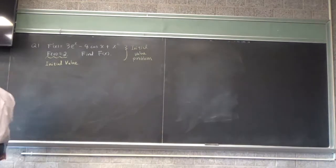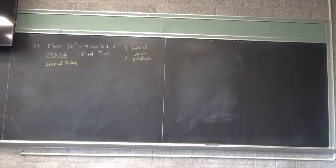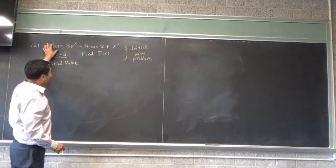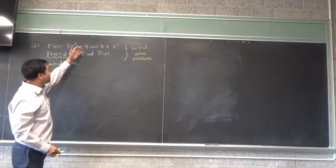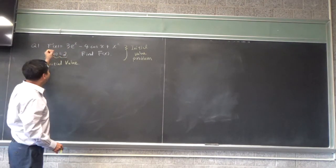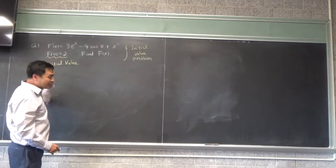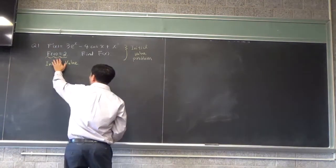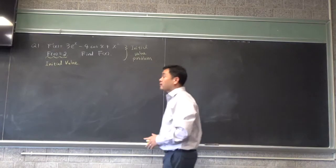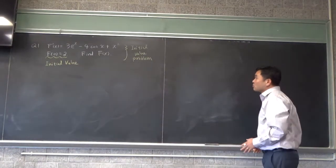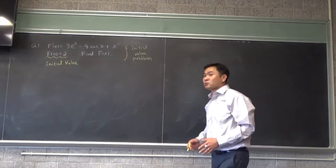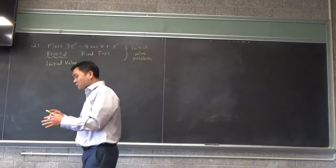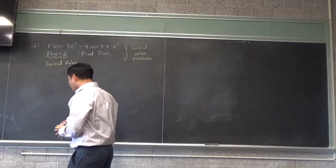Initial value problems have an equation that has a derivative, so you can really think of this as a differential equation, because there's a derivative and an equal sign. And then there's a condition which we call the initial value. Now a solution to the initial value problem is called a particular solution, but let me explain why that is a little later.